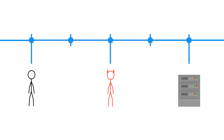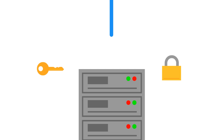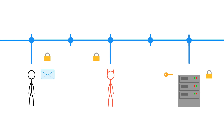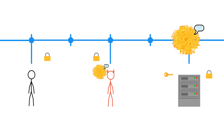Here's how we get around this problem today. Say that you want to send the server some private information. The server has two special keys. The public key can only be used to scramble information — no unscrambling. So it's safe to send you that key, so you can scramble your secrets before you send them along.